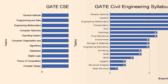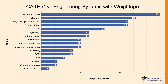Let's check the GATE Civil Engineering syllabus with weightage. As we have already discussed the weightage of General Aptitude, the rest of the subjects have different weightage. For Geotechnical Engineering, the expected marks will be 15. For Engineering Mathematics, the expected marks will be 11. For Transportation, the expected marks will be 11. All the topics are important — irrespective of the weightage, you must ensure to prepare for all the topics.